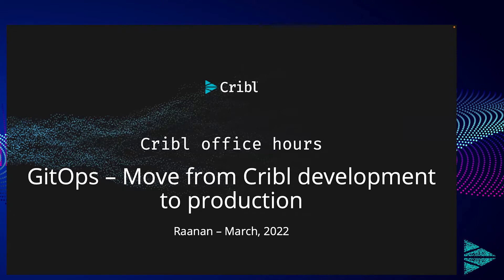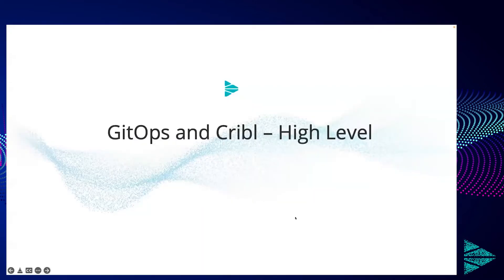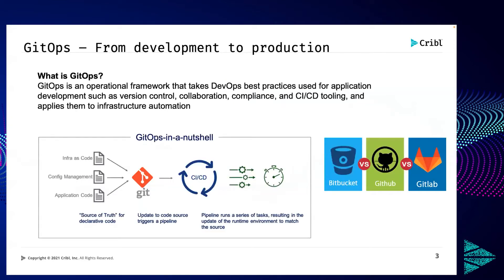The topic for today's Cribl Office Hours is about GitOps — specifically how Cribl recommends customers move from a Cribl dev environment to a Cribl production environment. The main reason Cribl decided to leverage Git, GitHub, GitLab, and Bitbucket to enable that move is because this GitOps product has a phenomenal framework that takes DevOps best practices into consideration.